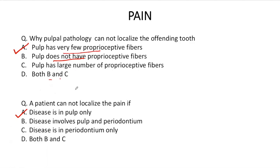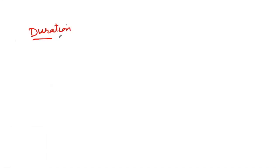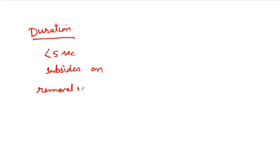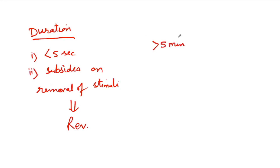Apart from localization, another thing we need to know about pain is the duration of pain. By duration of pain, we can determine whether the pulpal condition is reversible or irreversible in nature. If the pain occurs for less than five seconds and subsides on removal of the stimuli, that means the condition is reversible in nature and we do not need to do RCT — the tooth can be restored by restoration only. But if pain persists for more than five minutes and there is a lingering pain, that means the pain persists even after removal of the stimuli.